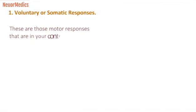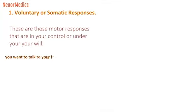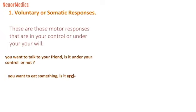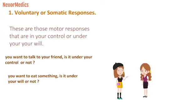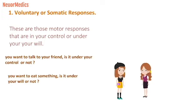Let's talk about the voluntary or somatic motor responses. These are those motor responses that are under your control or under your will. For example, when you want to talk to your friend, is it under your control or not? Obviously yes — that's under your control. So this is a voluntary or somatic motor response.